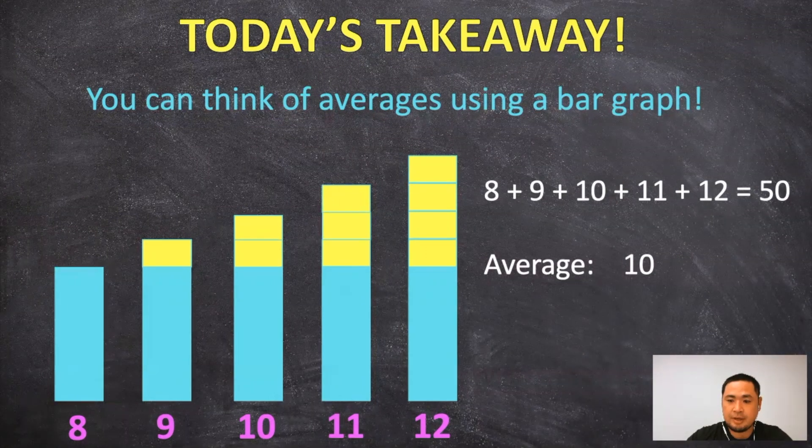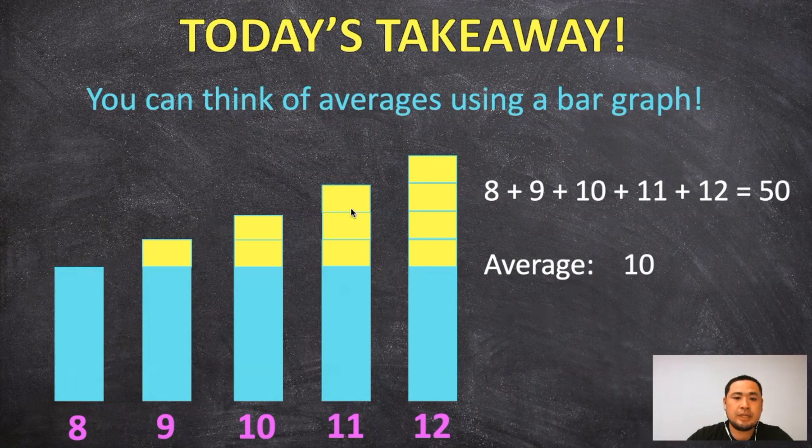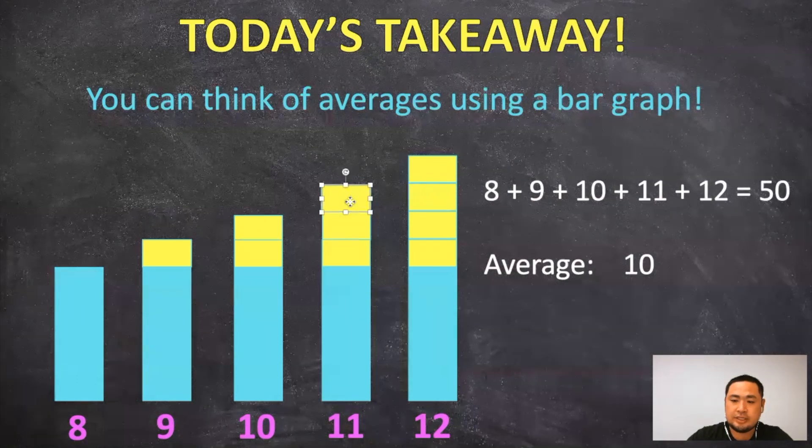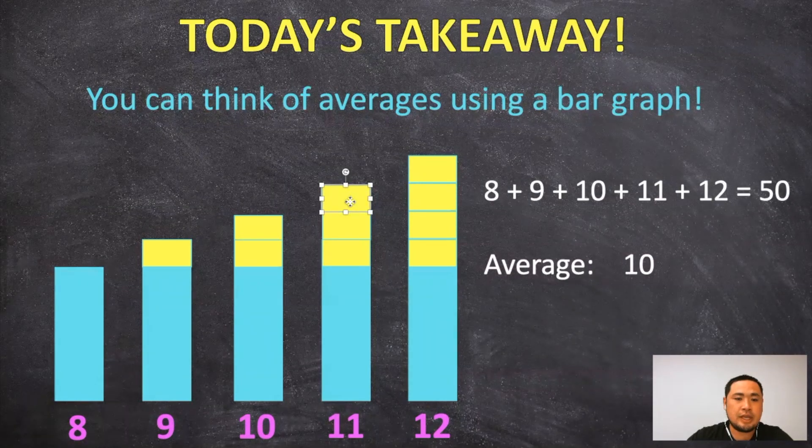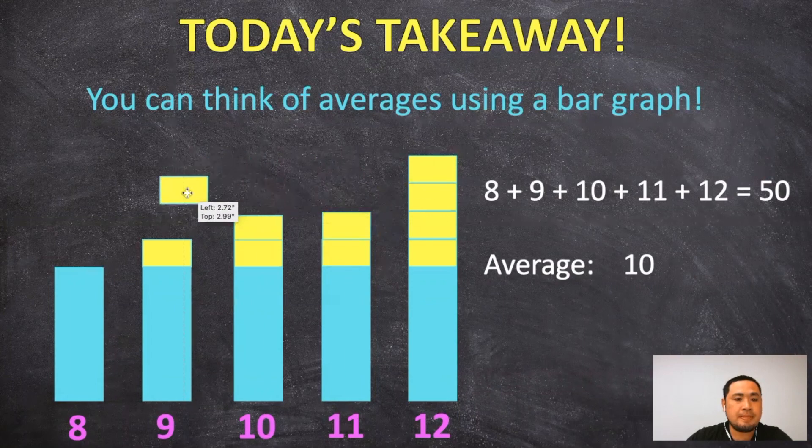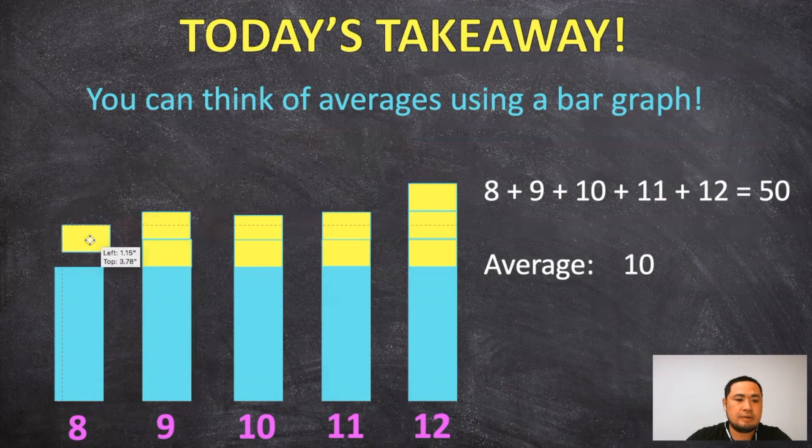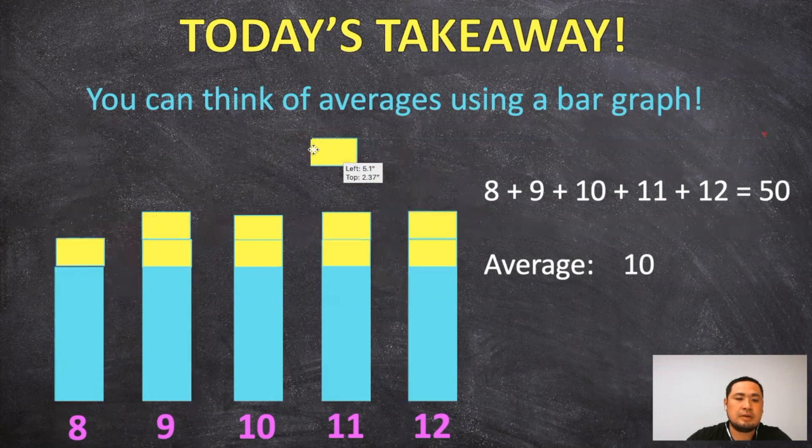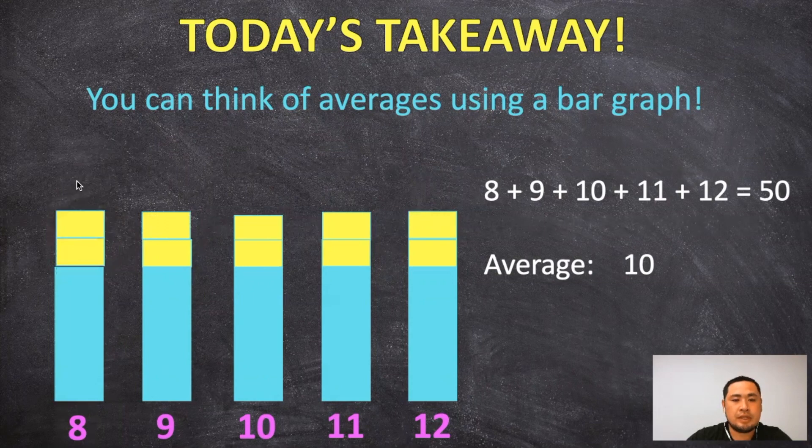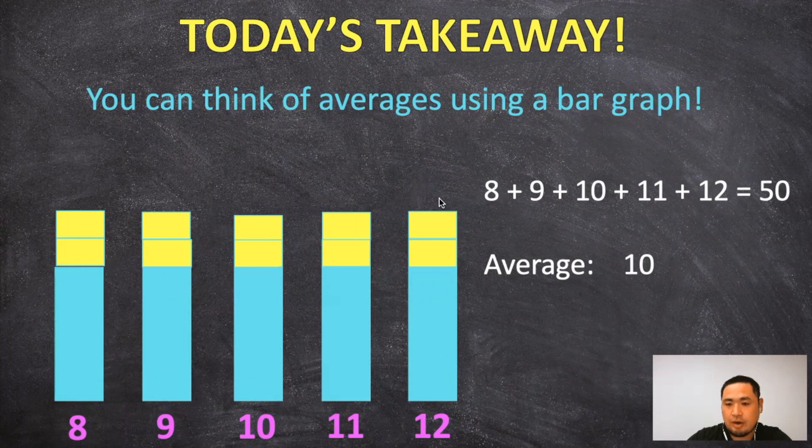And if we think about it from a bar graph standpoint, we can take each of these little yellow rectangles and distribute them right here. So we then know that the average is 10 all the way across.